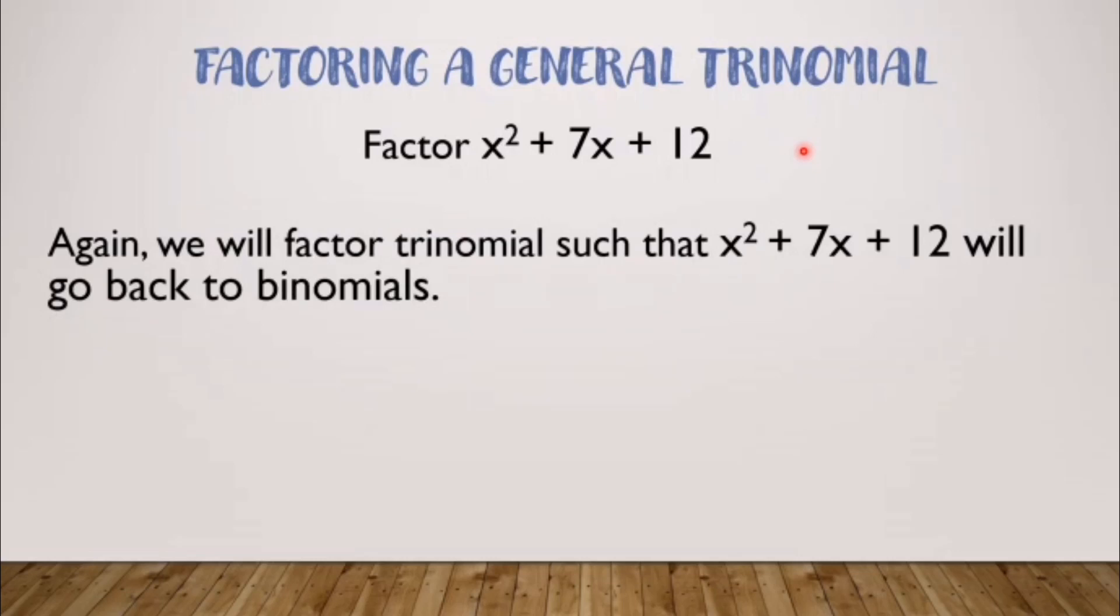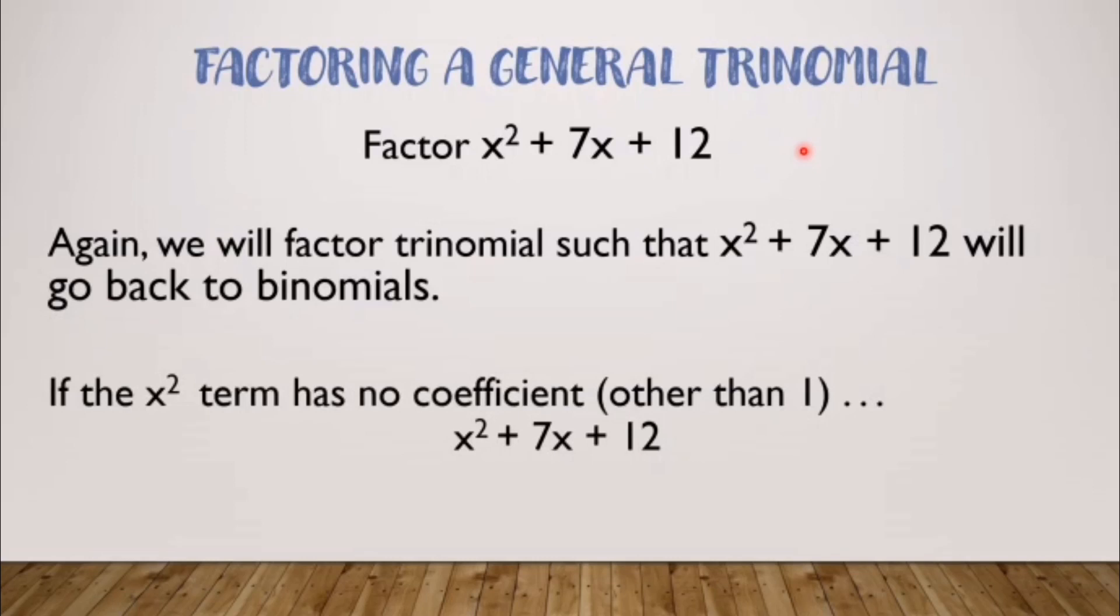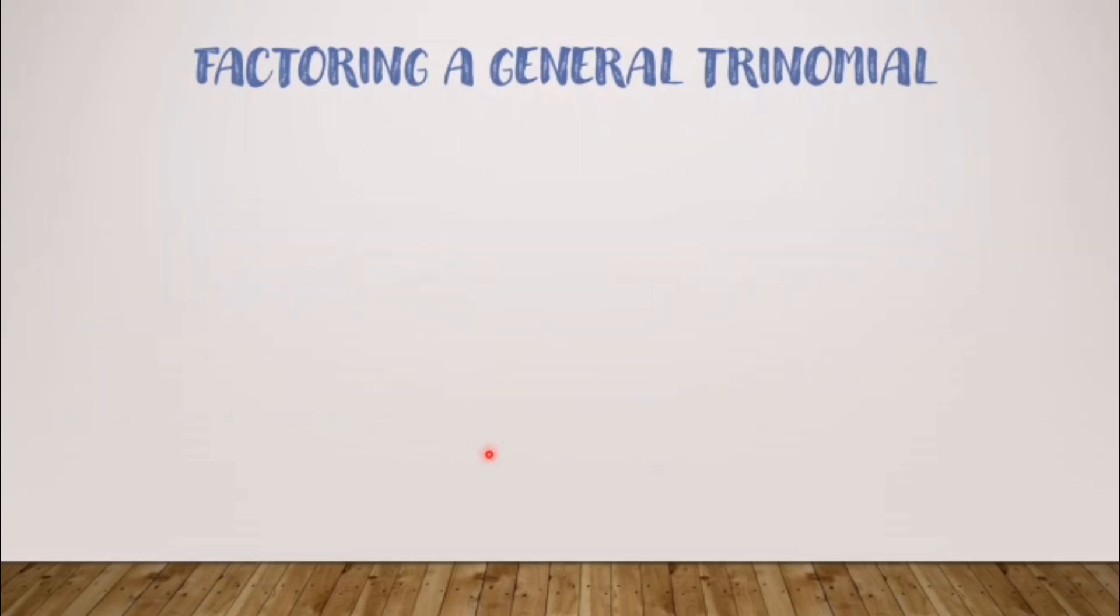We will factor trinomials such that x squared plus 7x plus 12 will go back to binomials. And take note, for what we're going to do, this is applicable if the x squared term has no coefficient other than 1. It's applicable if our leading term, which is x squared, has no coefficient other than 1. It should just be x squared, not 3x squared, 2x squared, negative 2x squared, etc. It should be just x squared. In that case, we can use the steps we're going to do for factoring.